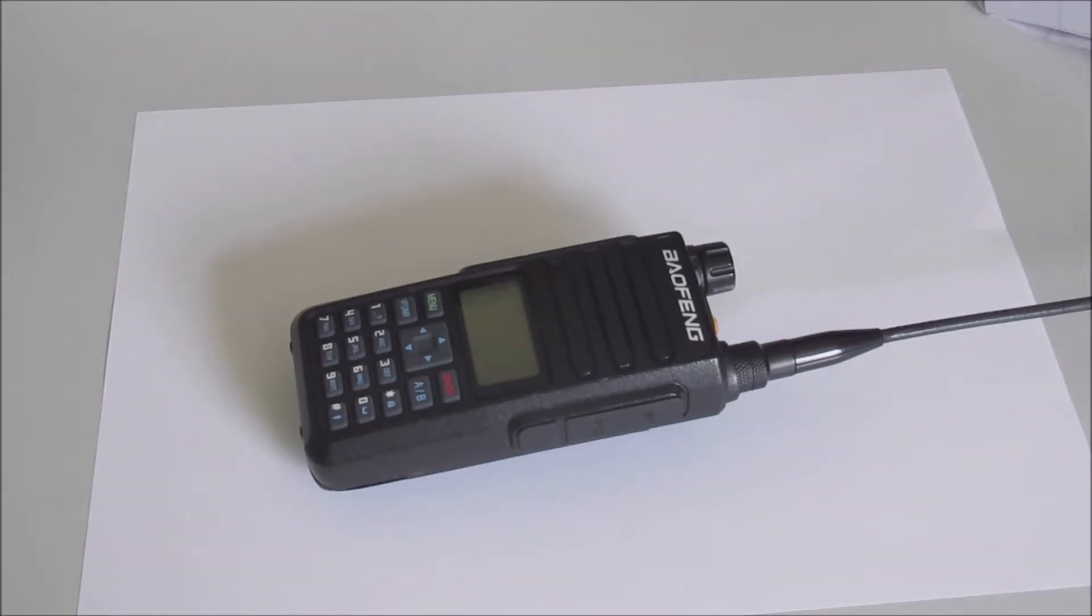There may be some very slight differences in firmware, but whether you see an 860 or an 1801, the CPS software and the code plugs are exactly the same, and the physical and electronic characteristics of the transceiver are the same.